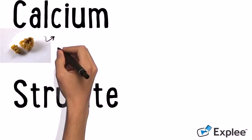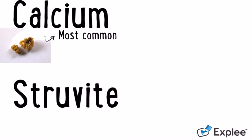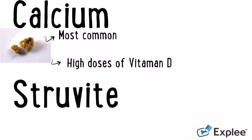Calcium stones are the most common and are found in the form of calcium oxalate. Dietary factors, high doses of vitamin D, and several metabolic disorders can increase the concentration of calcium or oxalate in the urine leading to the development of a calcium stone.